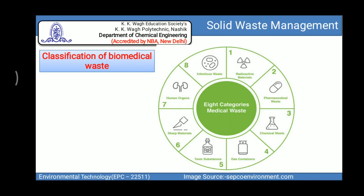The second category is pharmaceutical waste — waste coming from pharmaceutical industries, which may be raw material waste or processed waste. Expired medicines and tablets also come under pharmaceutical waste. The third is chemical waste, which shows ignitability, corrosivity, reactivity, or produces toxic leachate.